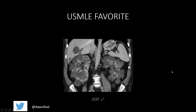A big USMLE favorite is the high association of berry aneurysms with autosomal dominant adult polycystic kidney disease. This coronal CT image of the abdomen shows enlargement of both kidneys, which are replaced with simple cysts — these hypodense structures. There are some cysts in the liver as well, but the dominant finding is enlarged kidneys with simple cysts in autosomal dominant polycystic kidney disease.